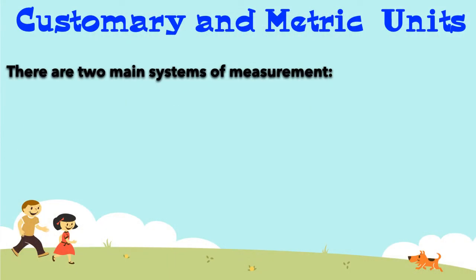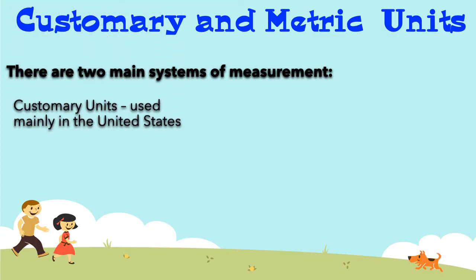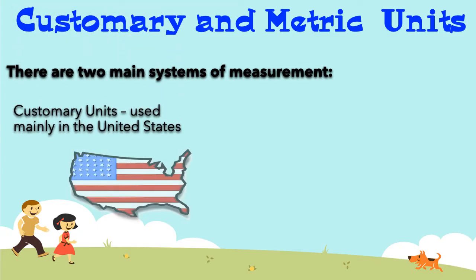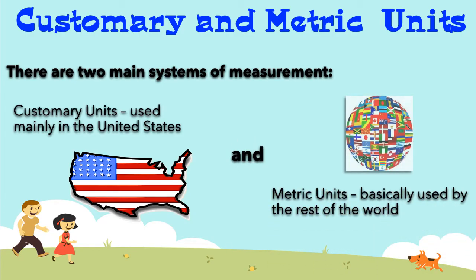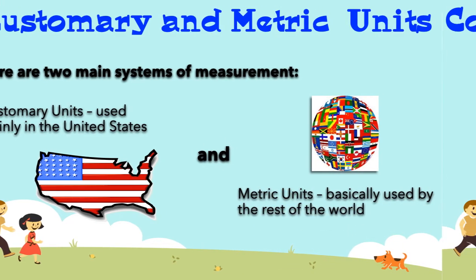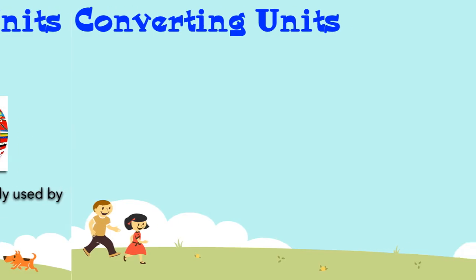There are two main systems of measurement. Customary units, used mainly in the United States, and metric units, basically used by the rest of the world.